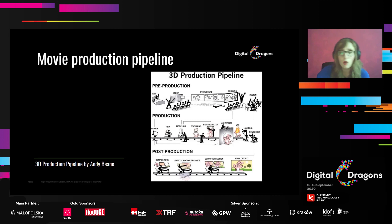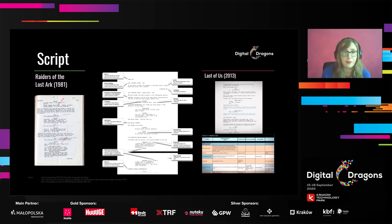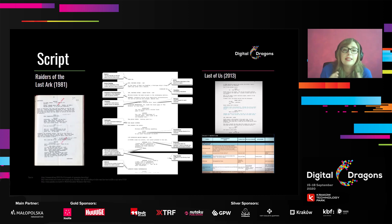For better understanding of how movie preproduction and production influence game production, let's look closely at some of the most important steps. First is story. Story is always important, and the script is a fundamental part of every story. There is one basic rule: if you have a good script, you can make a really good movie — or a really bad one. But if you have a bad script, you can only make a bad movie. This applies to games too. If we have a bad script and boring characters, there is no way we will create an amazing game, and our players won't be satisfied.